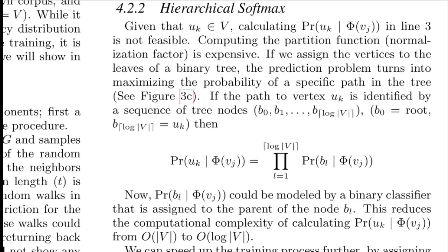Hierarchical softmax is nothing but an approximation to the softmax. In this, we assign the vertices to the leaves of a binary tree. The prediction problem turns into maximizing the probability of a specific path in the tree. If the path has a vertex uk - u is the notation that we use for the context word, which is identified by a sequence of tree nodes. We arrange this where b0 is the root and b log of V is nothing but the final context word that you would want to reach from any center word.